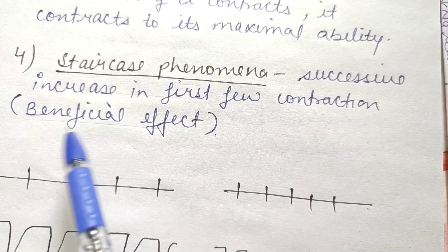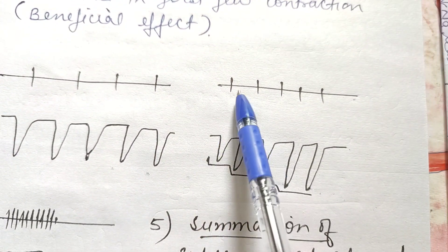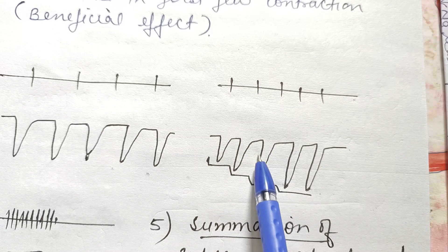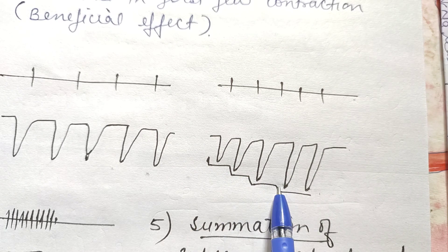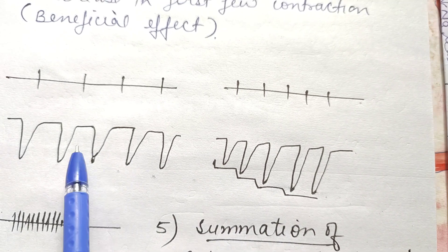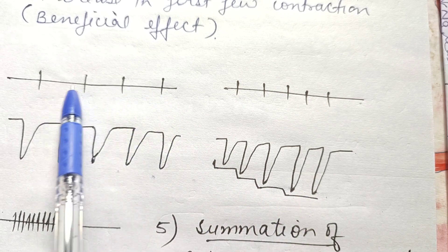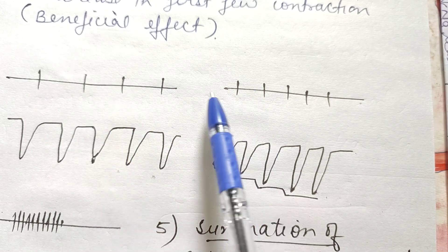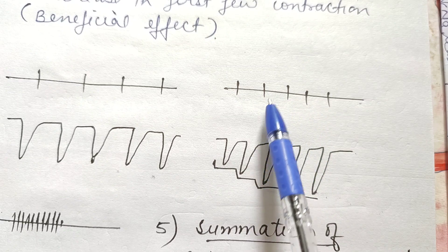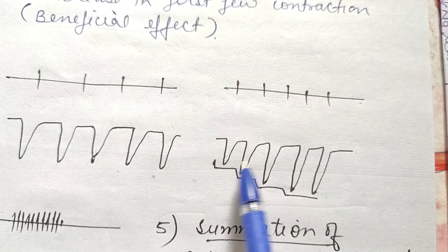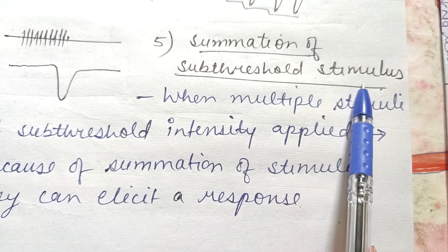Next is the staircase phenomenon. When successive stimulations are given, there is an increase in the first few contractions showing a beneficial effect — that is the staircase phenomenon. With every stimulus the force of contraction increases, resembling a staircase. This is the same beneficial effect we read in skeletal muscle. You may wonder how the all-or-none law can hold if this is happening — the difference is that in all-or-none law we give enough time for the muscle to relax, but in staircase stimuli are given milliseconds apart so contractions summate, producing the beneficial effect.